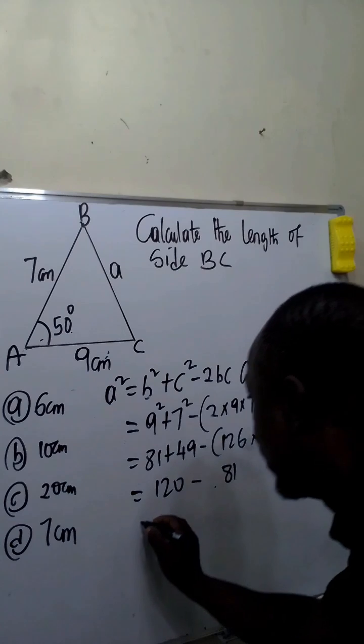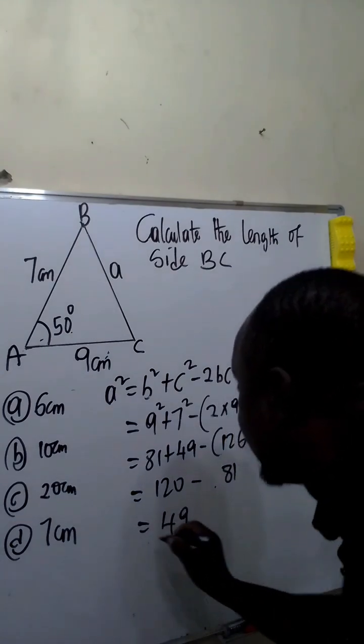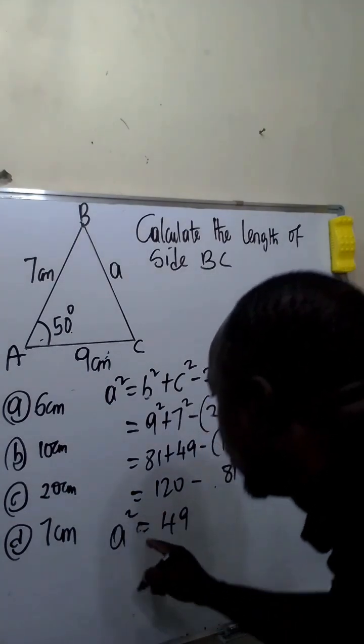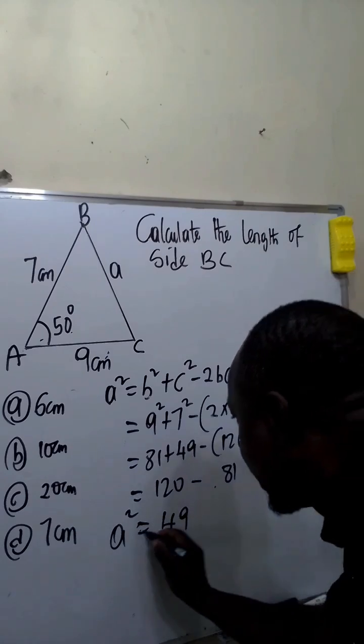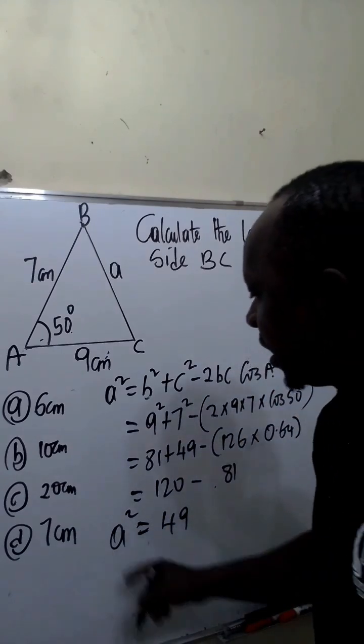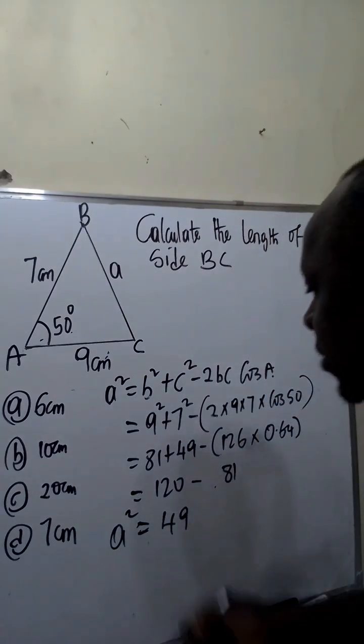Now 120 minus 81 is 49. That is, A² will be equal to 49. Now to find the value of A, we are going to be taking the square root of both sides.